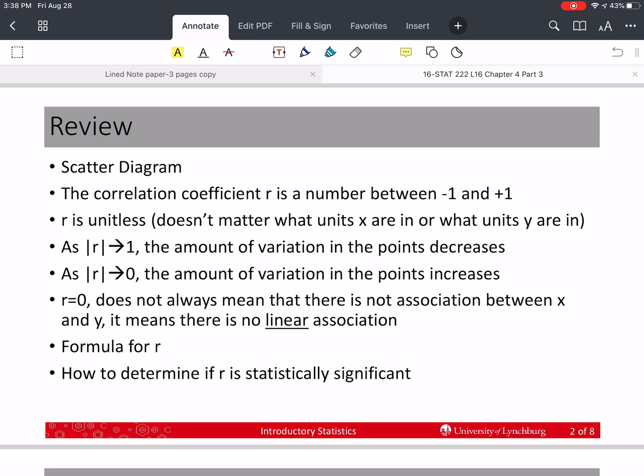So last time in this section, we've talked about what scatter diagrams are, which are plots, XY plots of points. We talked about what the correlation coefficient is. It's between negative 1 and positive 1. And R is unitless, so it doesn't matter what units X or Y have.